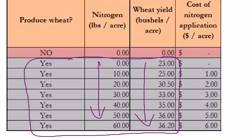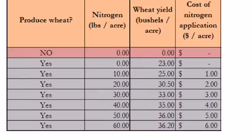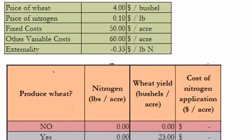There are a lot of other costs of raising wheat beyond just nitrogen fertilizer, and we're going to put all of those together in this video. To calculate things like the cost of nitrogen application, I have to give you some prices. In this table, I'll tell you the price of nitrogen is 10 cents per pound. There are also fixed costs and other variable costs that will become clear shortly.